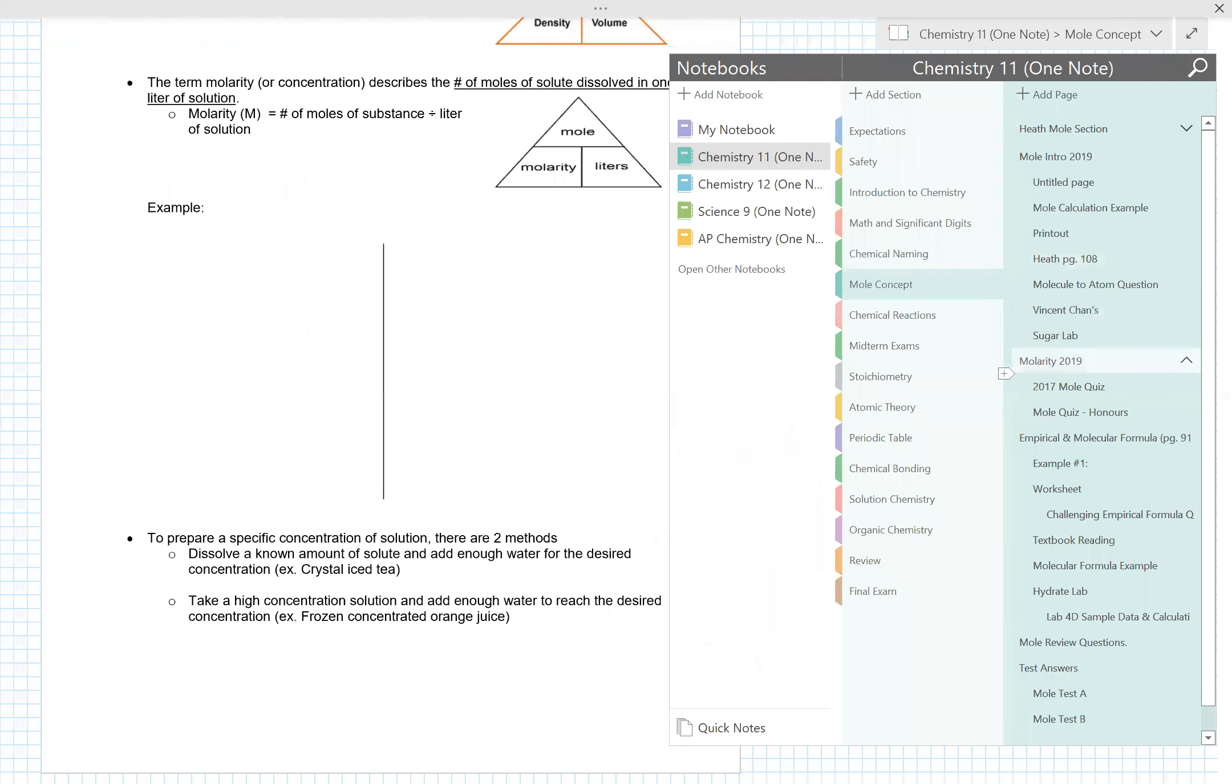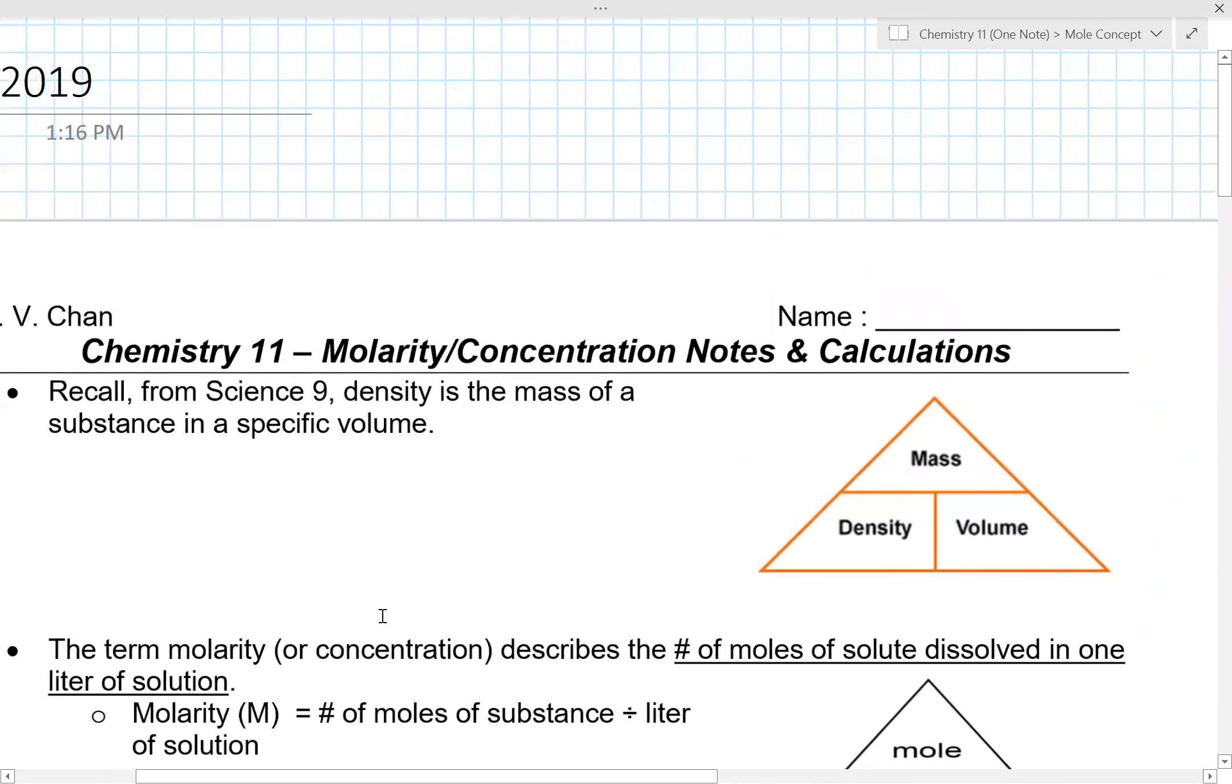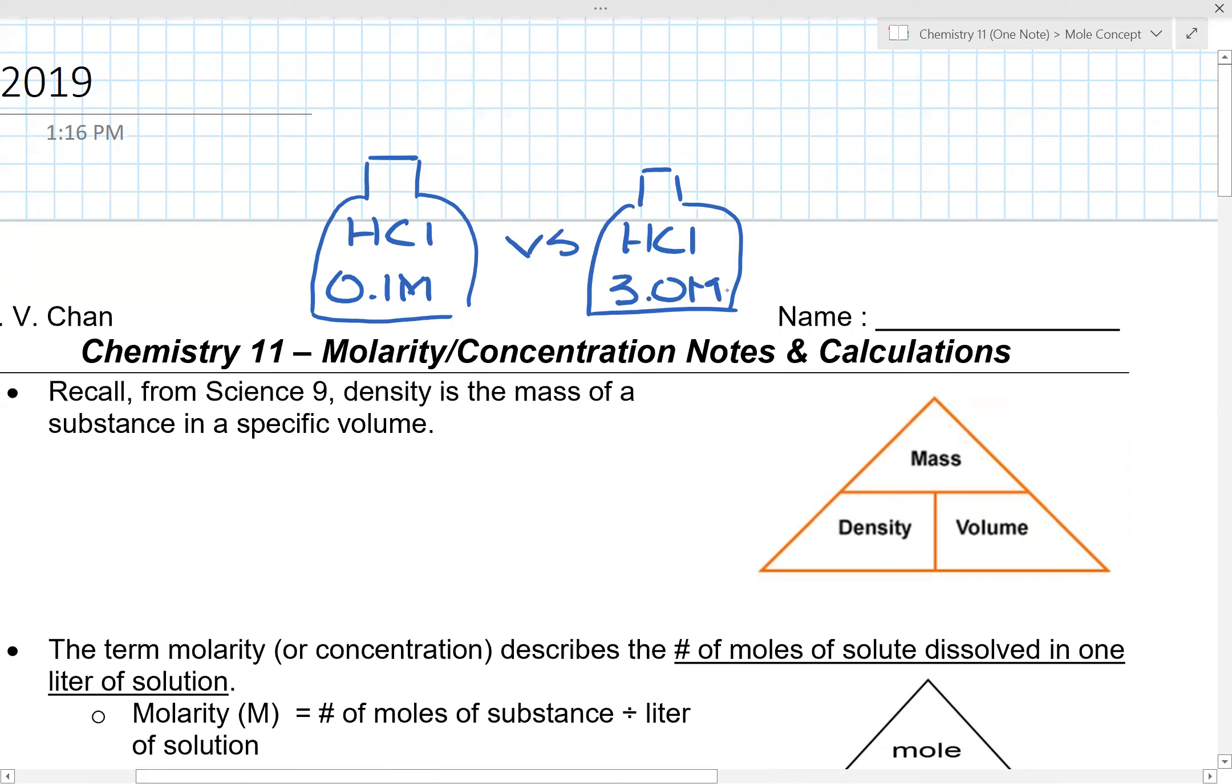One of the practical uses of the mole unit is something called molarity. Now molarity, some of you have probably been exposed to back in grade 10 when you did a lab. You might see a bottle that has hydrochloric acid, 0.1 molarity (M), versus another bottle of HCl that's 3.0 M. So the question is, what does the M mean, and what is the difference between 0.1 and 3.0? Some of you might know that one is more dilute and the other is more concentrated, but how do they get those numbers?